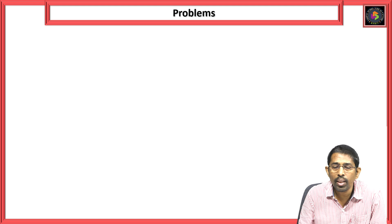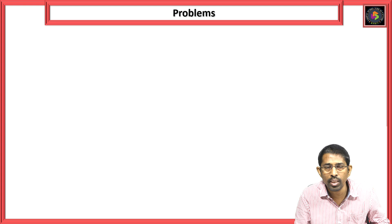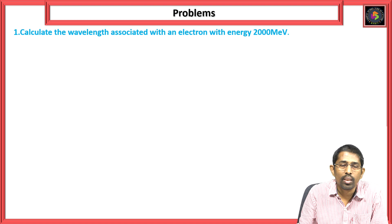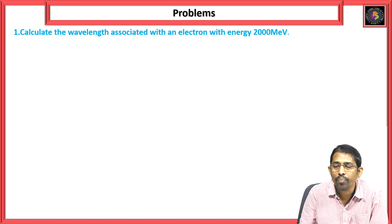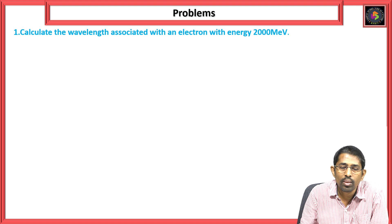These are the problems here. Several times they were asked in the internal exam and external exam, mid exams and end examinations. The first problem for today: let's calculate the wavelength associated with an electron with energy 200 mega electron volts.